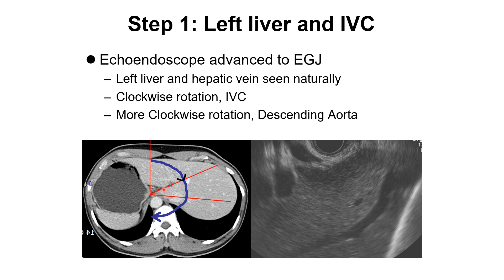This is the left liver on CT. We can understand each organ and vessel according to the scope rotations. With clockwise rotation, the hepatic vein and IVC can be seen. With more rotation, we can see the aorta, and then we can find the pancreas area.